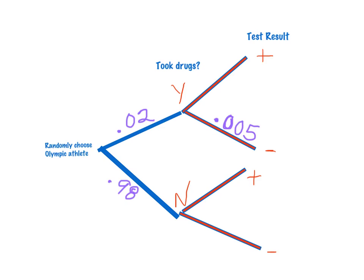Which means that this test is going to accurately predict positive results for those who took drugs 99.5% of the time, so I'll place 0.995 on this branch of the tree.